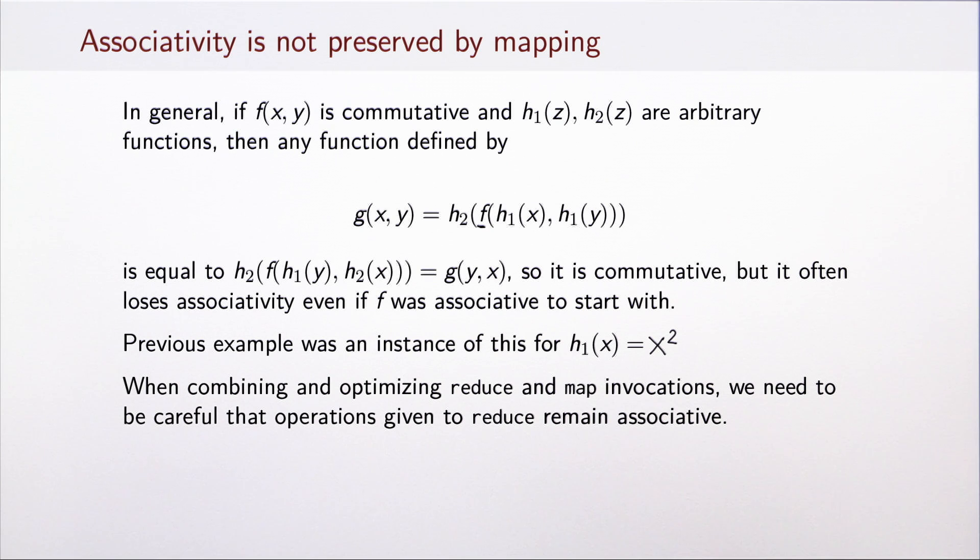As we have seen in the previous example, however, g loses the property of associativity even when f did have it. The previous example was an instance of this phenomenon when h1 was x squared and h2 was identity function. So when combining and optimizing the combinations of reduce and map invocations, it is important to keep in mind that applying such functions to arguments of some associative operations may lose associativity.